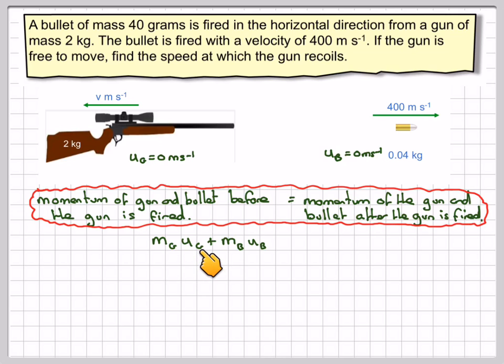So, using the mass of the gun times the initial velocity of the gun plus the mass of the bullet times the initial velocity of the bullet is equal to the mass of the gun times the final velocity of the gun plus the mass of the bullet times the final velocity of the bullet.